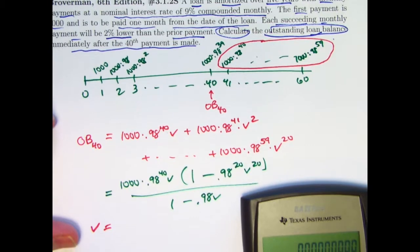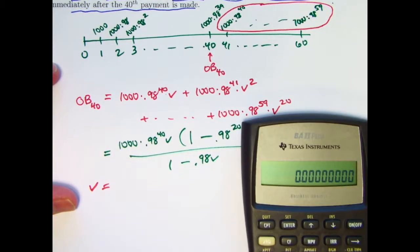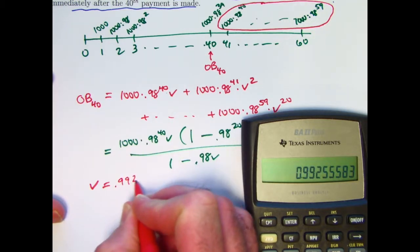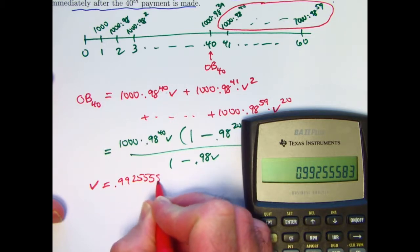To find the monthly interest rate, I'd need to take 0.09 and divide it by 12, which gives 0.0075. Therefore V, the monthly discount factor, is going to be what I get when I add one to this and take the reciprocal. 0.99255583. Let me store that in register 0.